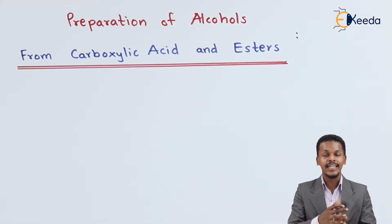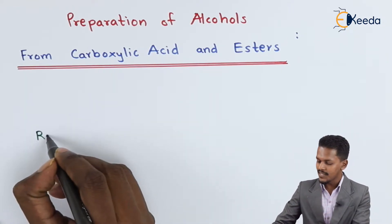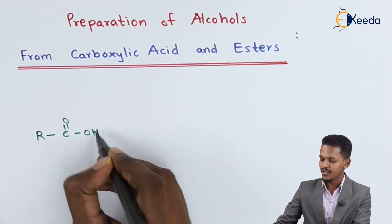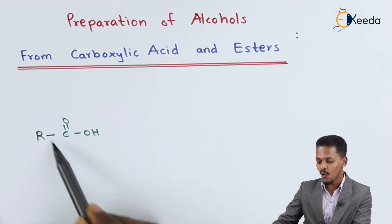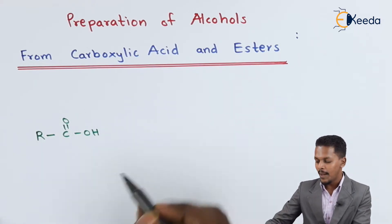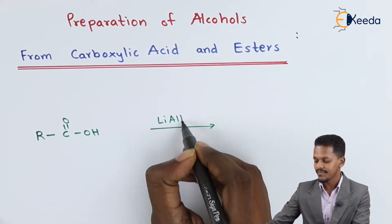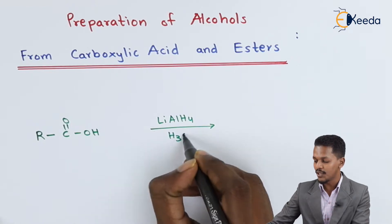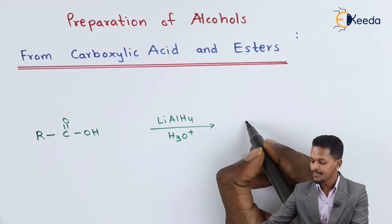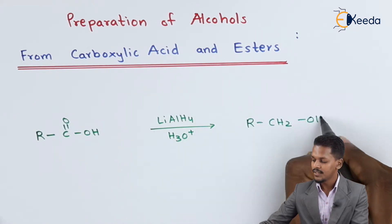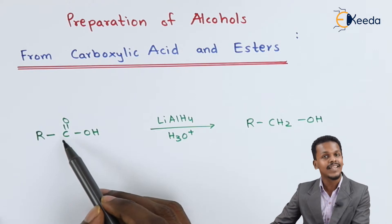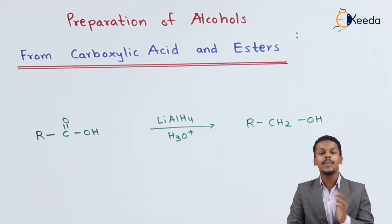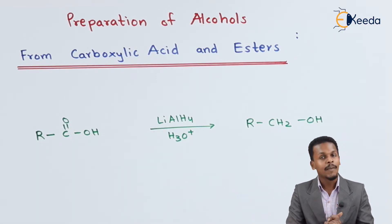Let me talk about how we can easily convert carboxylic acid to an alcohol. If we consider a carboxylic acid that is R-C(=O)-OH, by using lithium aluminum hydride in presence of an acidic condition that is H3O+, we can easily convert this carbonyl group into a CH2OH group. So by using lithium aluminum hydride we can convert the carboxylic acid to a primary alcohol.